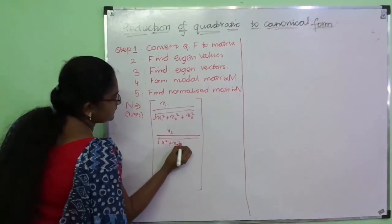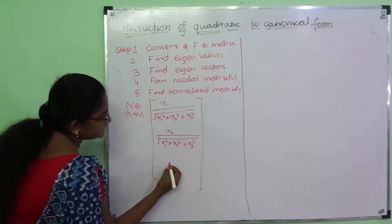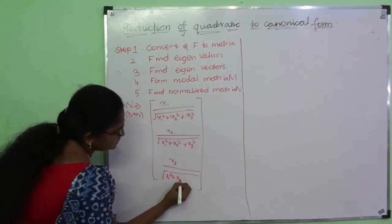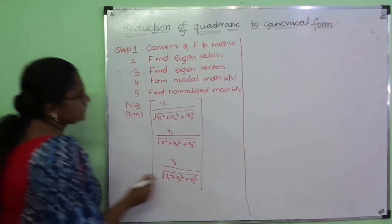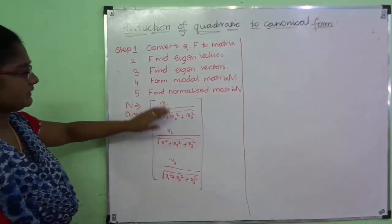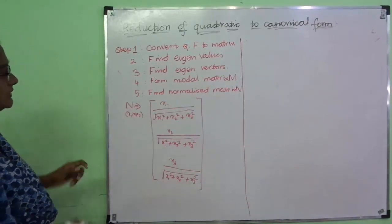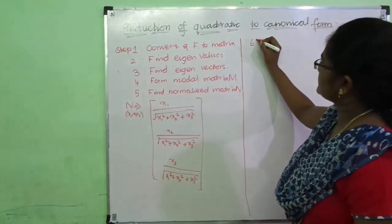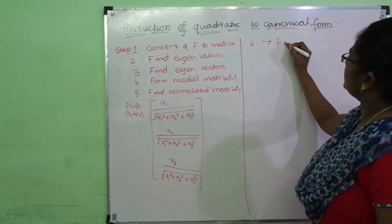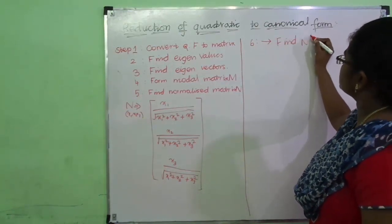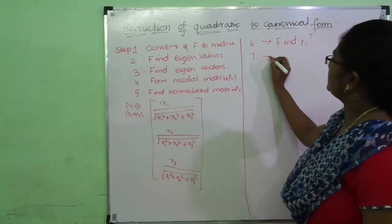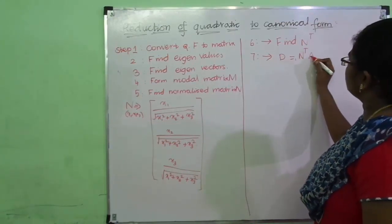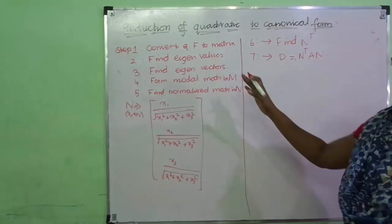By substituting the x1, x2, x3 values you can find the normalized matrix N. Step 6: find N transpose, that is the transpose of the normalized matrix. Then the seventh and final step: find D which is equal to N transpose times A times N. This will give you the canonical form of the given quadratic form.